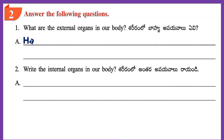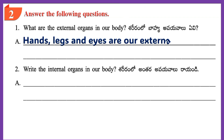Question 1: What are the external organs in our body? Answer: Hands, Legs and Eyes are our external organs.